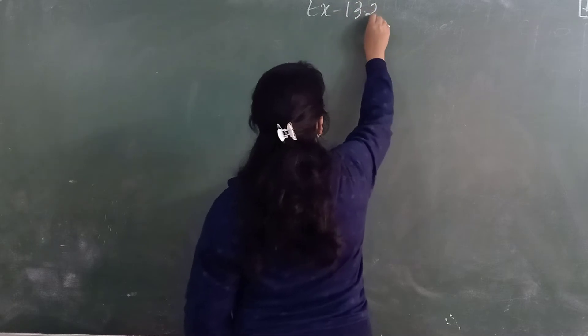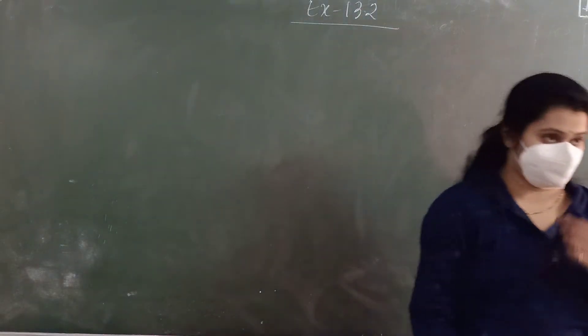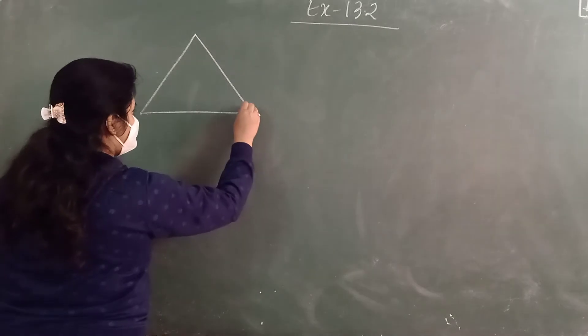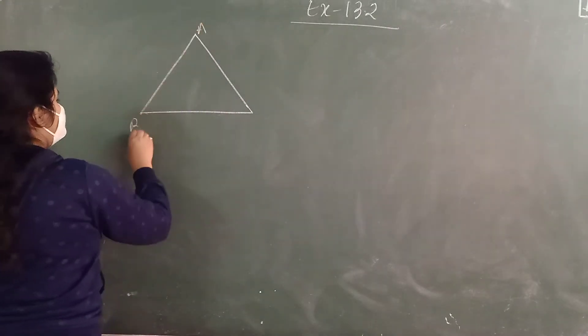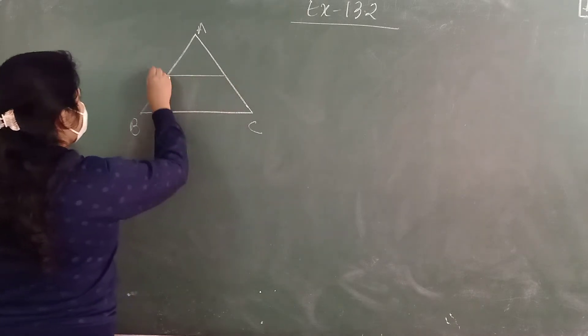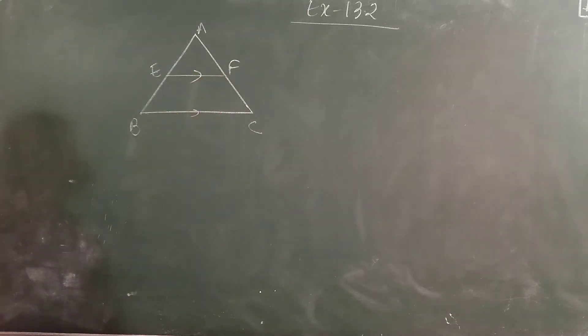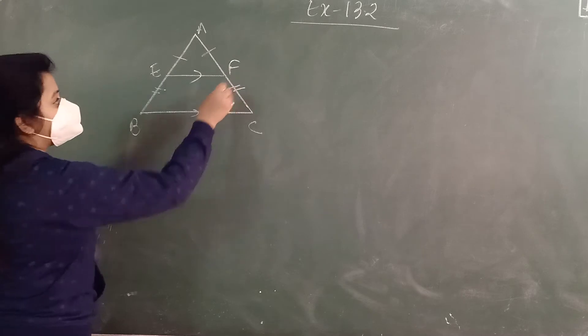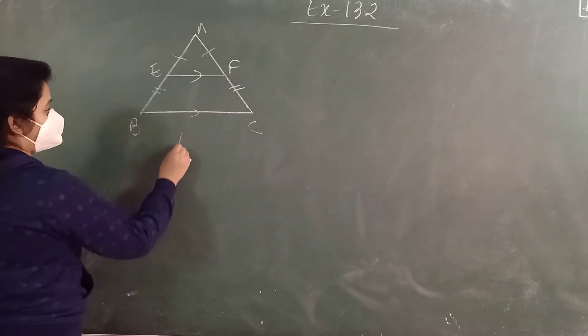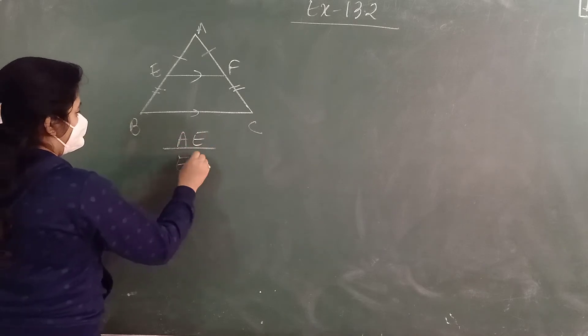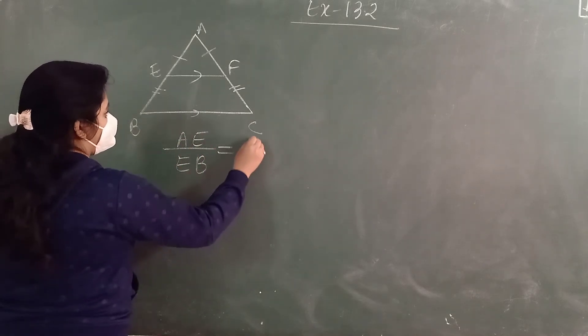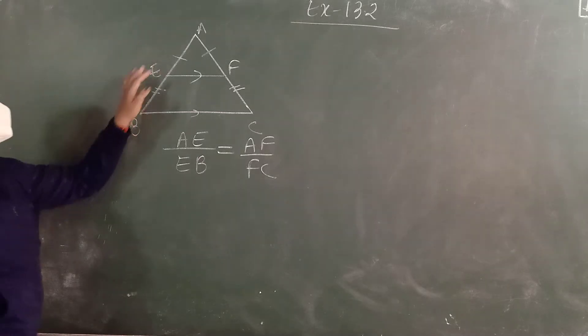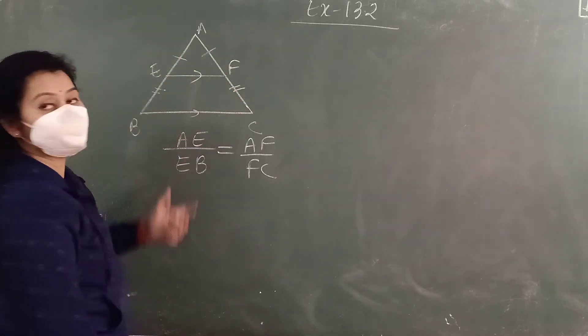Exercise 13.2. In this exercise you have the theorem. In this theorem, if you have two triangles, A, B, C and this is the side E, F. If these two sides are parallel, then we can see that their ratio, ratio of the parts should also be equal. And the conclusion of this theorem is, when the ratios are equal, then we can see that these two sides are parallel.